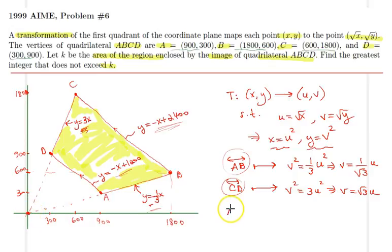How about AD? AD will be mapped onto, well, AD has the following equation, so therefore v² = -u² + 1200. One can reorganize this expression, and therefore we would have u² + v² = 1200, which is simply the equation of a circle.